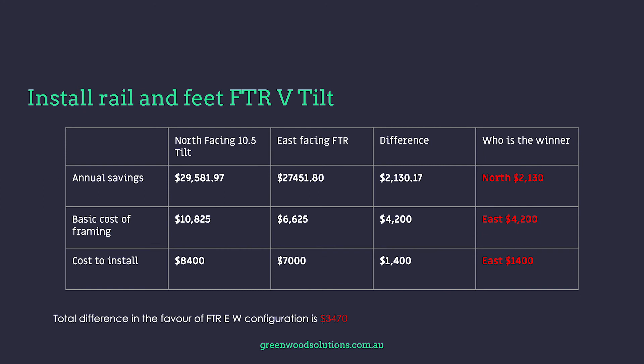From the comparison table, we have the annual saving between north-facing at 10.5 degrees and east-west flat to the roof, along with the basic cost of framing and cost to install. The total difference is in favour of the flat to the roof east-west configuration by $3,470. However, remember the advantage is purely in installation and material costs, while the production differential will continue year after year — something to consider.